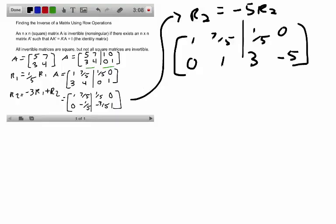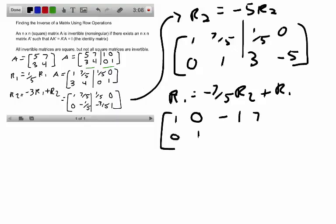For our final row operation, we will let row 1 be equal to negative 7/5 row 2 plus row 1. And this gives us 1, 0, negative 4, 7, 0, 1, 3, negative 5.